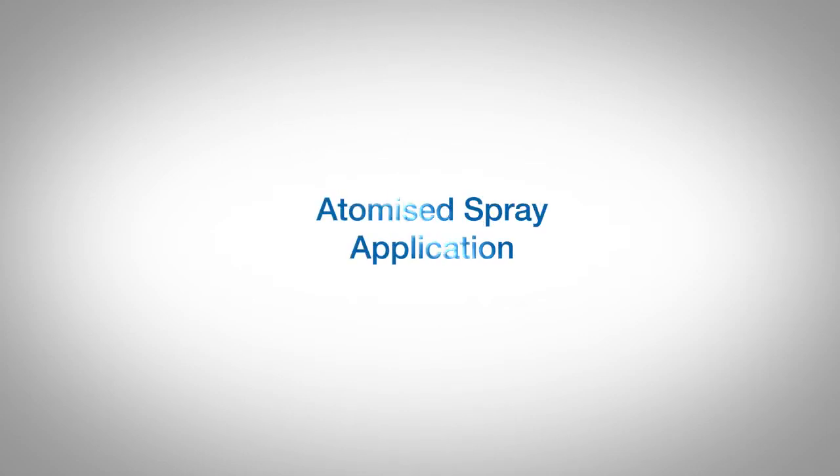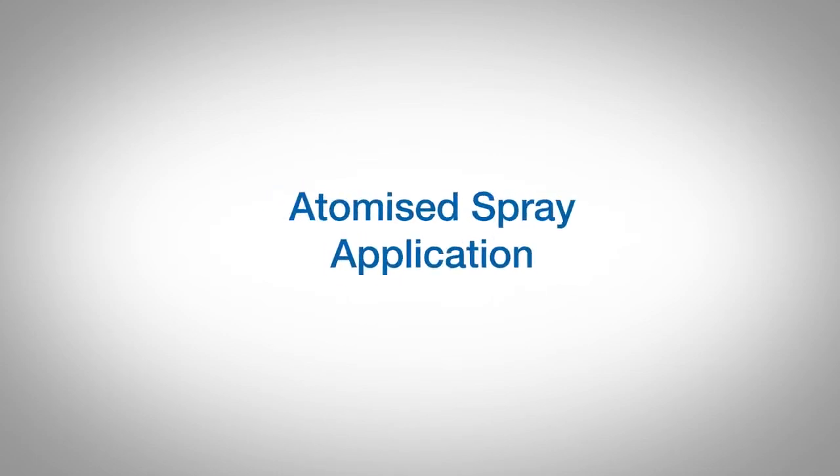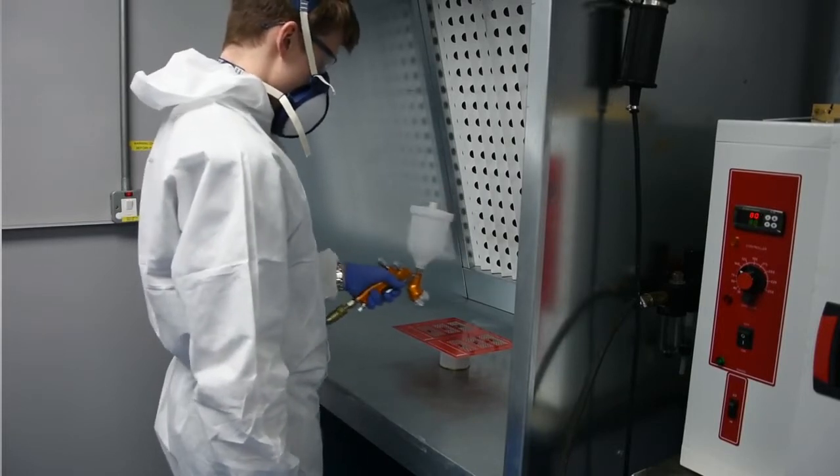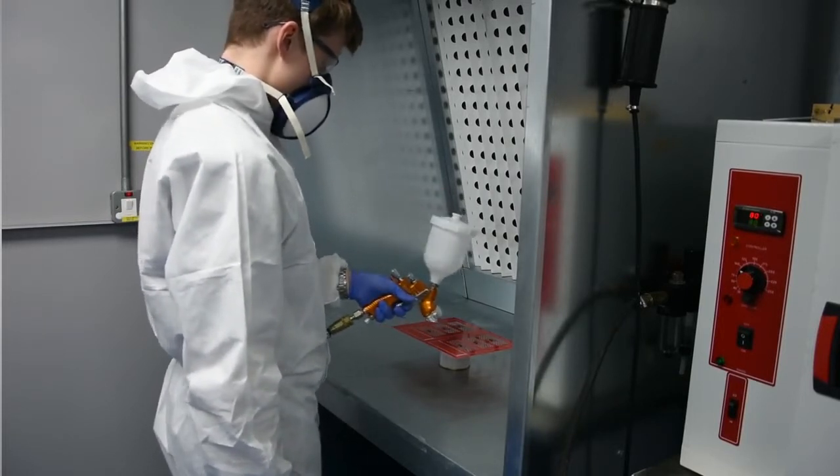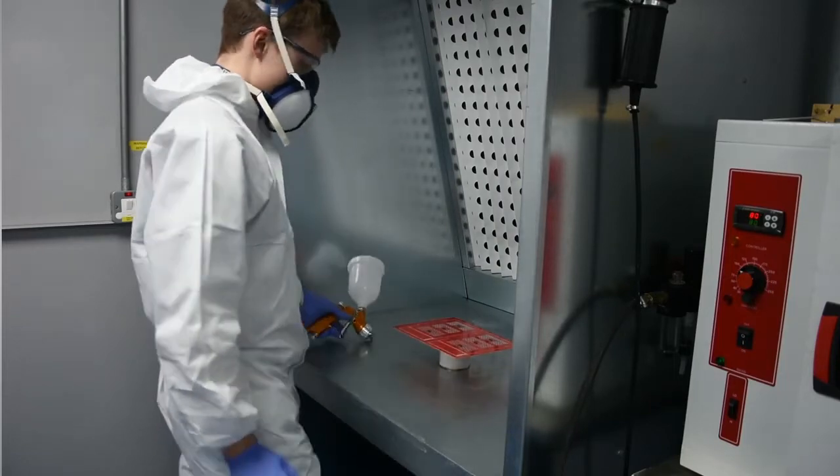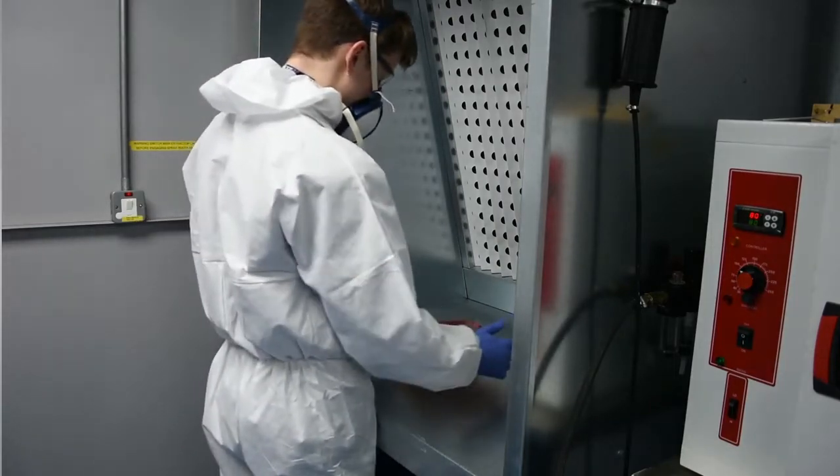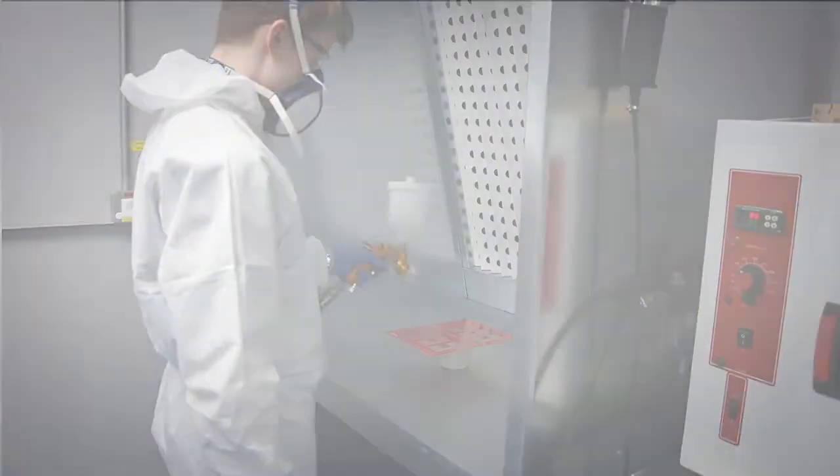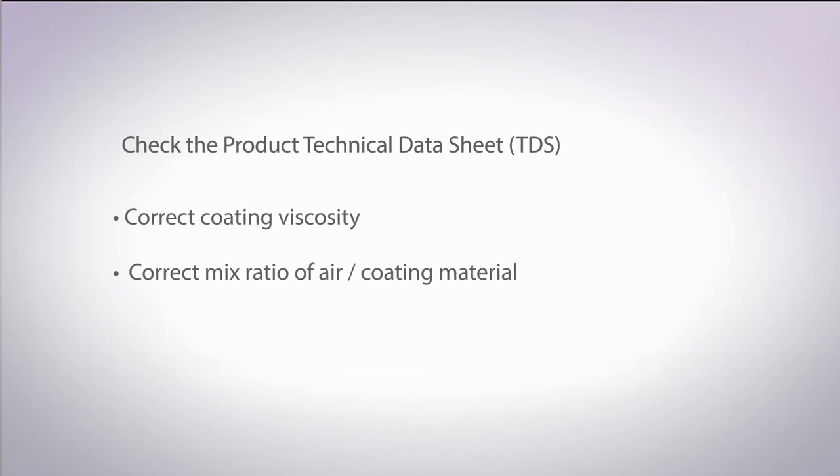Conformal coatings may also be applied using an atomized spray gun. The technique for this is similar to spraying by hand with aerosol, but can be a much quicker and more efficient way to apply the coating. With this method, ventilation is a key consideration and a professional spray booth is advised. Check the product's TDS to ensure you use the right viscosity for applying. Some products such as Electrolube's AFAF come ready to use. Some will need to be diluted with thinners.